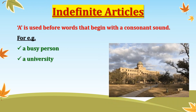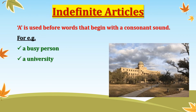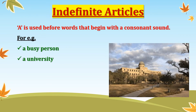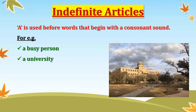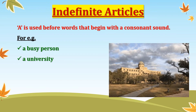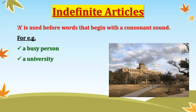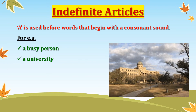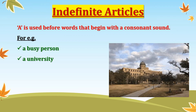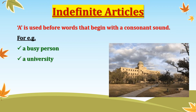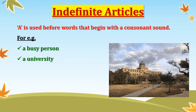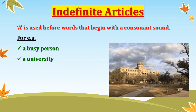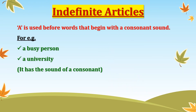Let us take another example: 'a university.' Though this word 'university' is starting with 'u', which is a vowel, but what is the sound? The letter with which it starts is 'u', but the sound is 'you'. 'You' is not a vowel sound. That is why we have used the article 'a' with 'university' — it has the sound of a consonant.